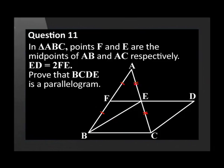In triangle ABC, F and E are the midpoints of AB and AC respectively. The length of ED equals 2 times the length of FE. Prove that BCDE is a parallelogram.